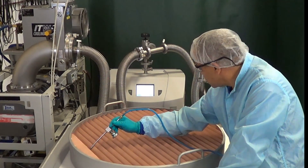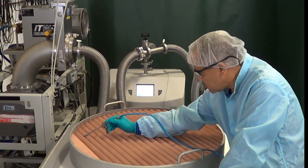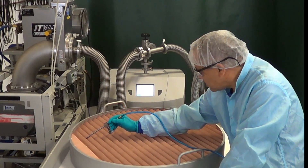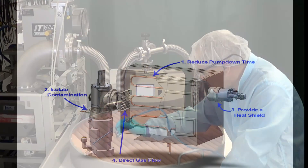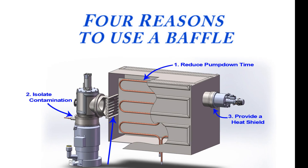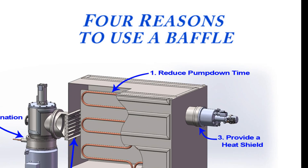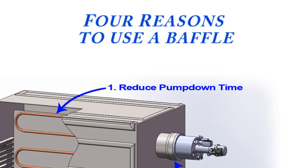Vacuum baffles and cold traps are important components of many vacuum systems. There are four reasons these products are often used. First, a cryo coil or baffle can reduce the pump-down time of a chamber by as much as seventy-five percent.